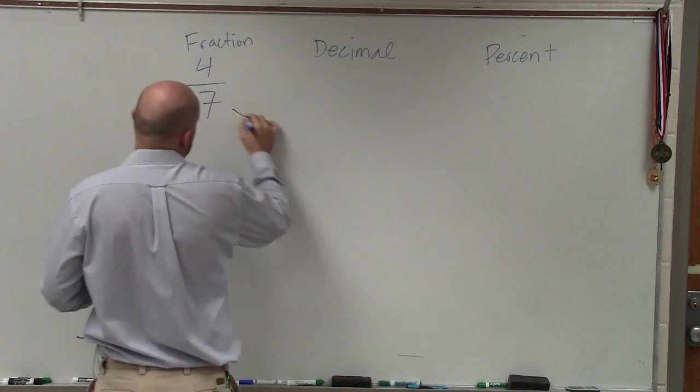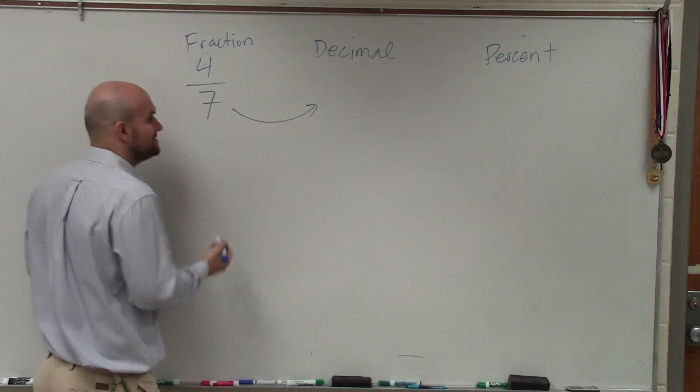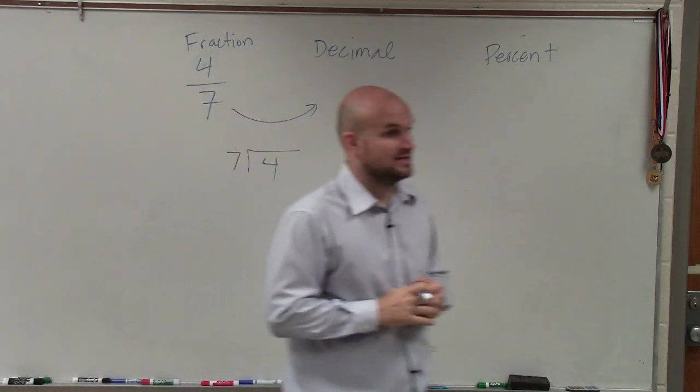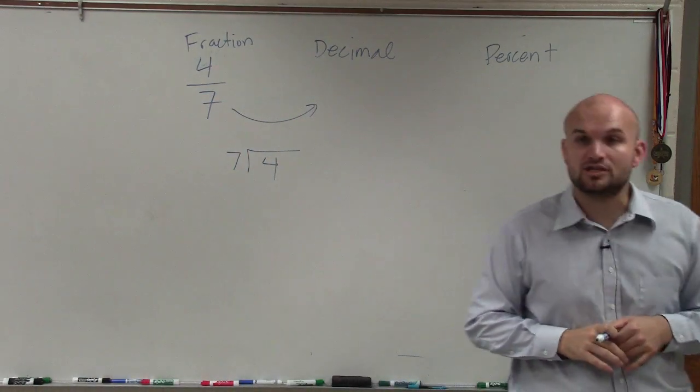So to go from a fraction to a decimal, basically, I need to apply long division. 7 divided into 4. All right, so we're going to go back into practicing our long division with decimals.